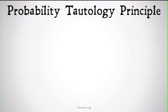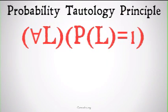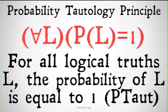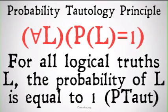Next up, we have the probability tautology principle: for all laws of logic, the probability of that law of logic is equal to one. I'm using L to represent logical truths here — for all logical truths L, the probability of L is equal to one. I'm going to represent that rule with P-tot, or the probability tautology principle. This also makes intuitive sense: if you think that laws of logic are true in all possible worlds, then there is no chance that a law of logic could be false, so the probability of any law of logic has to be one.